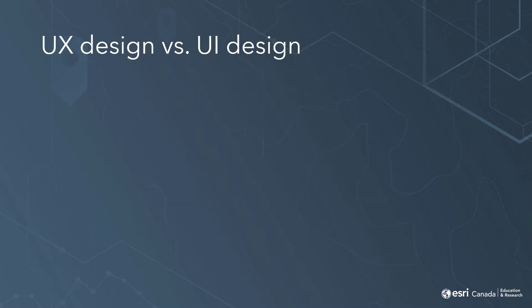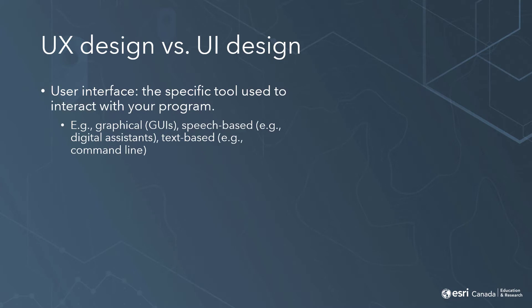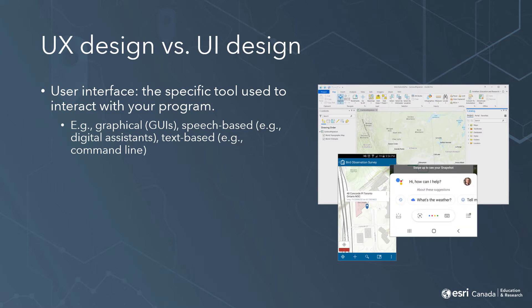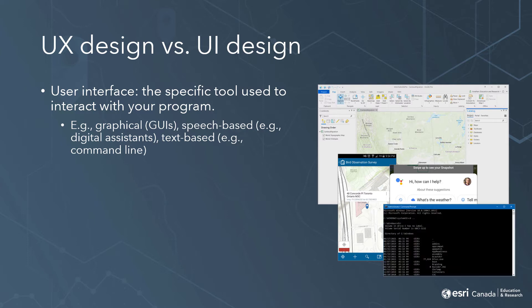As we get started, it's helpful to keep some definitions in mind. Sometimes the terms UX and UI are used interchangeably, but there are some important differences between them. The user interface is the specific tool that you interact with while using the program. For most programs and apps nowadays, this will be a graphical user interface, or GUI. But it could also be an audio or speech-based interface, like when you're talking to a digital assistant, or a text-based interface, like if you're working with a command line tool.